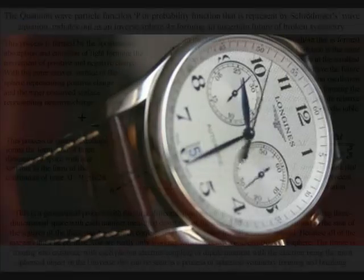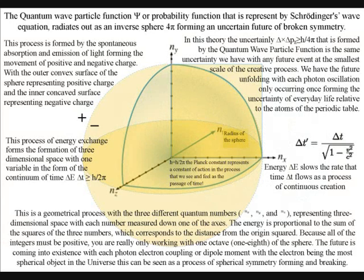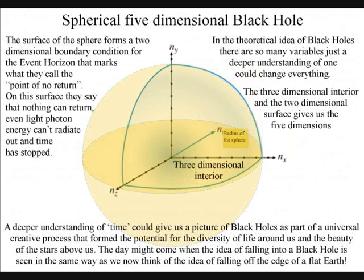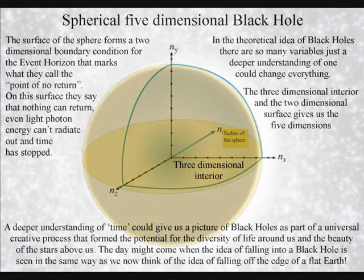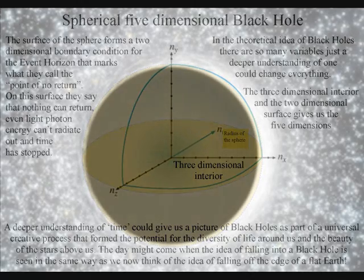This theory gives us a deeper understanding of time, quantum mechanics, and relativity that would change our view of black holes completely. In this new research, they say that in our three-dimensional universe, black holes have a two-dimensional event horizon—that is, they are surrounded by a two-dimensional boundary that marks what they call the point of no return. On this surface, they say nothing can return; even light photon energy can't radiate out. Time has stopped.